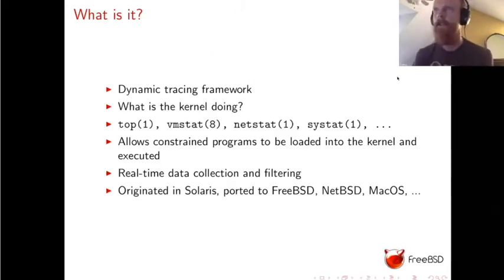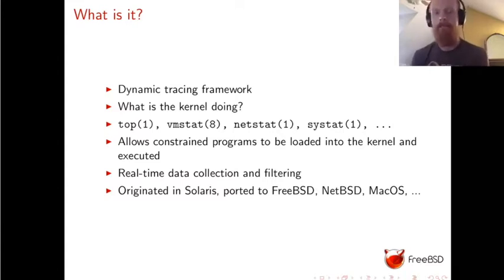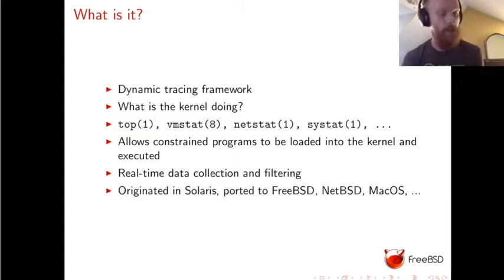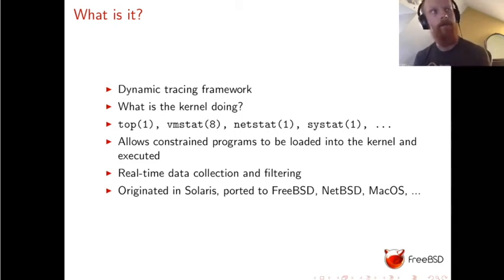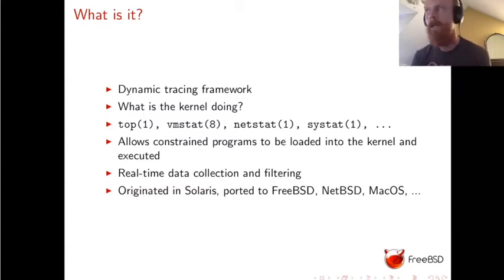DTrace is something that comes up in mailing list conversations and on IRC very often. But what exactly is it? Well, it's a so-called dynamic tracing framework. That doesn't really answer the question directly, but it's easy to understand given a common problem that arises when you're running FreeBSD or any operating system in production. You have some server running a database or web server, serving requests from client systems. It works great for several months, and then for some reason a problem arises — maybe your request latency goes up by an order of magnitude, or database transactions per second drops, maybe only in the middle of the night.